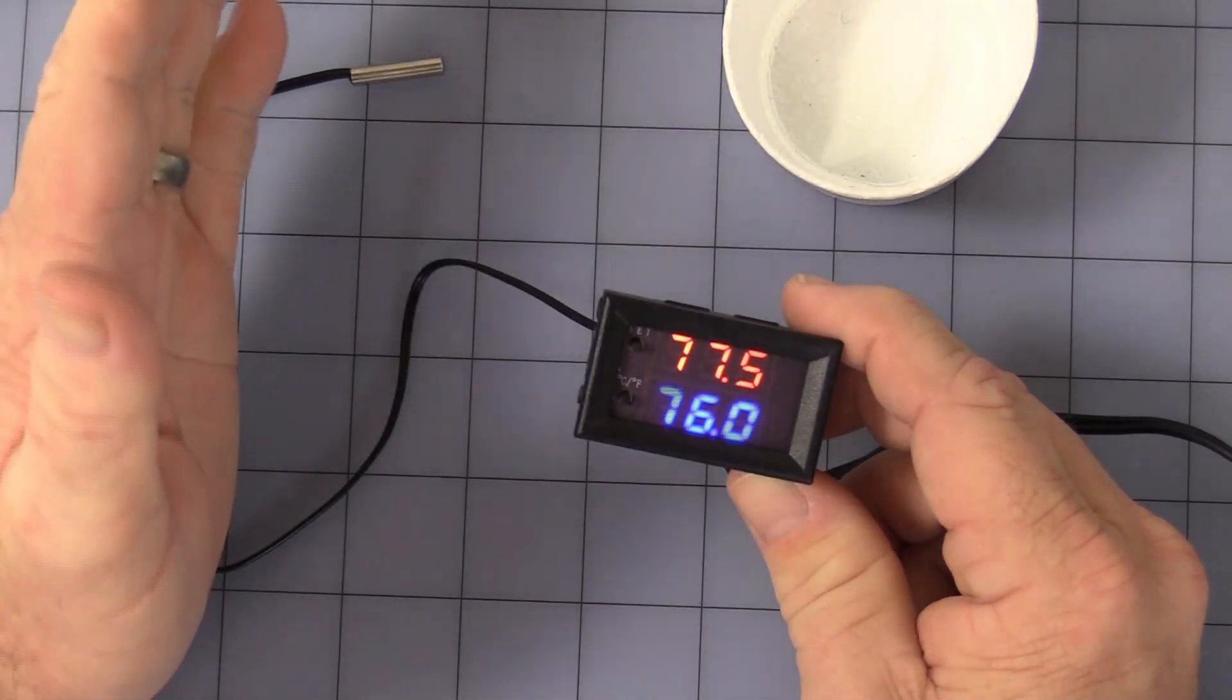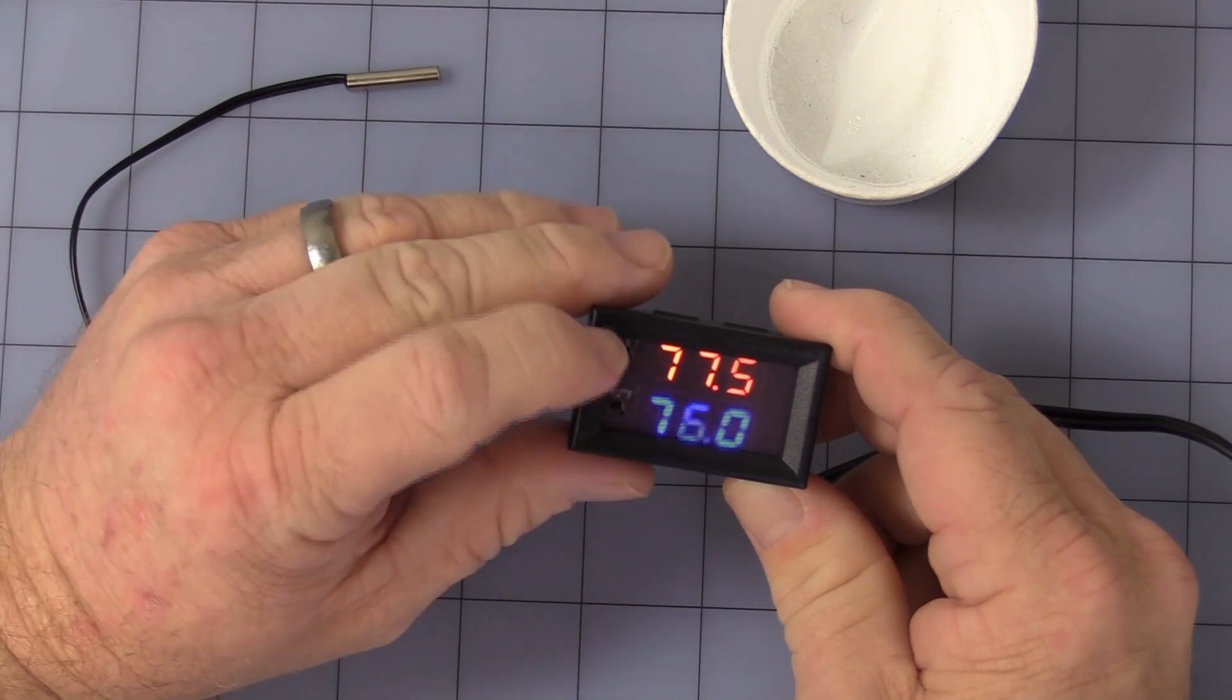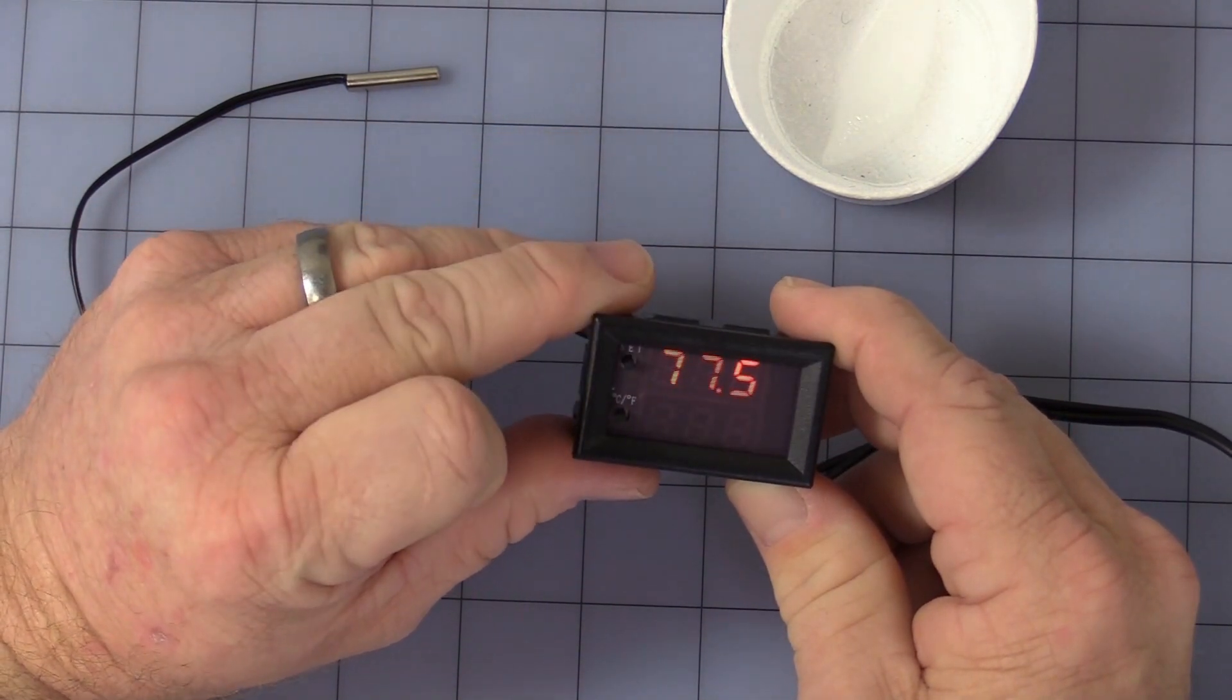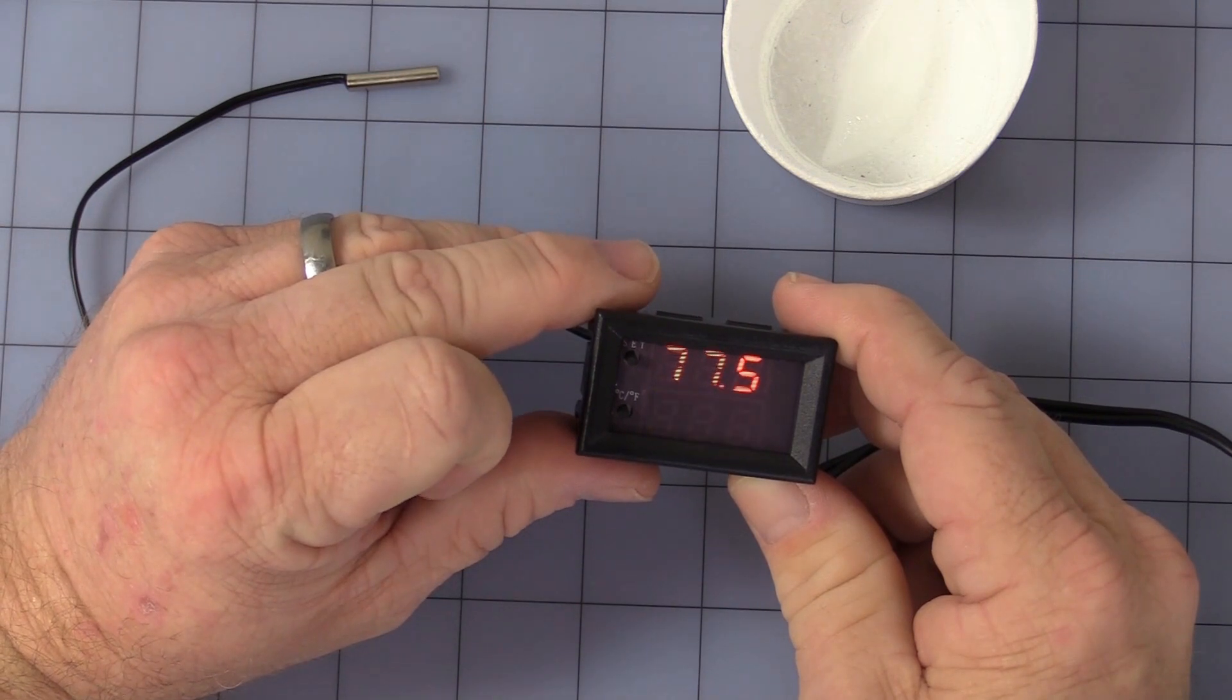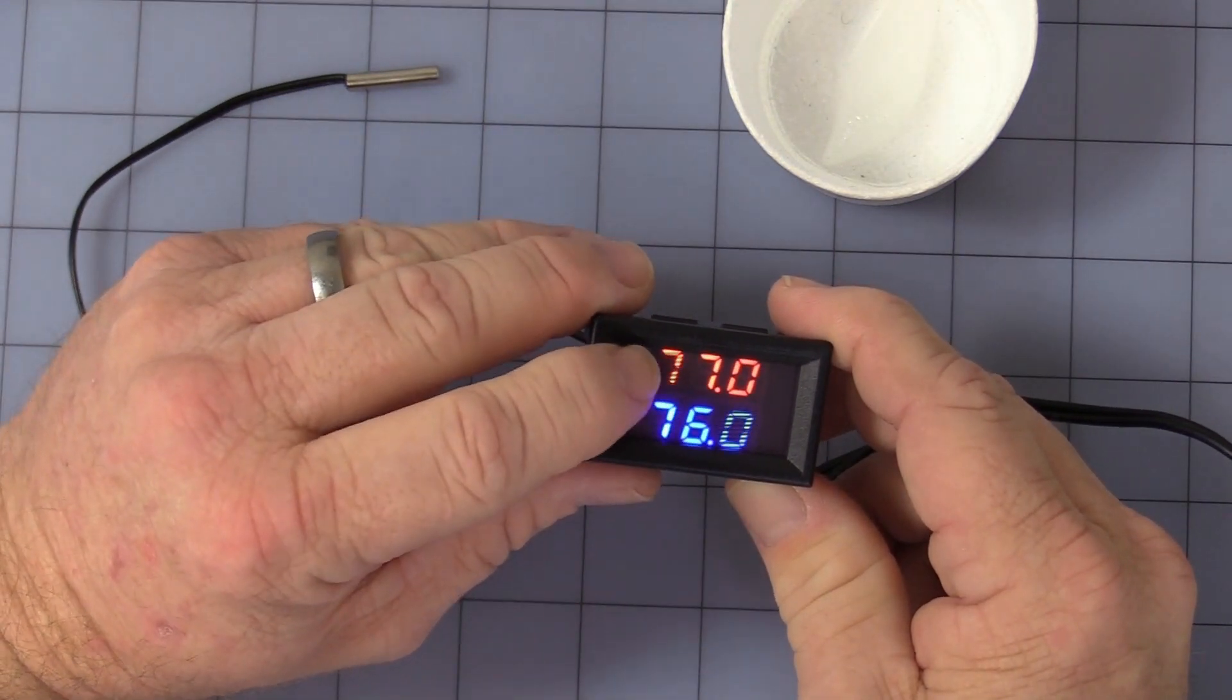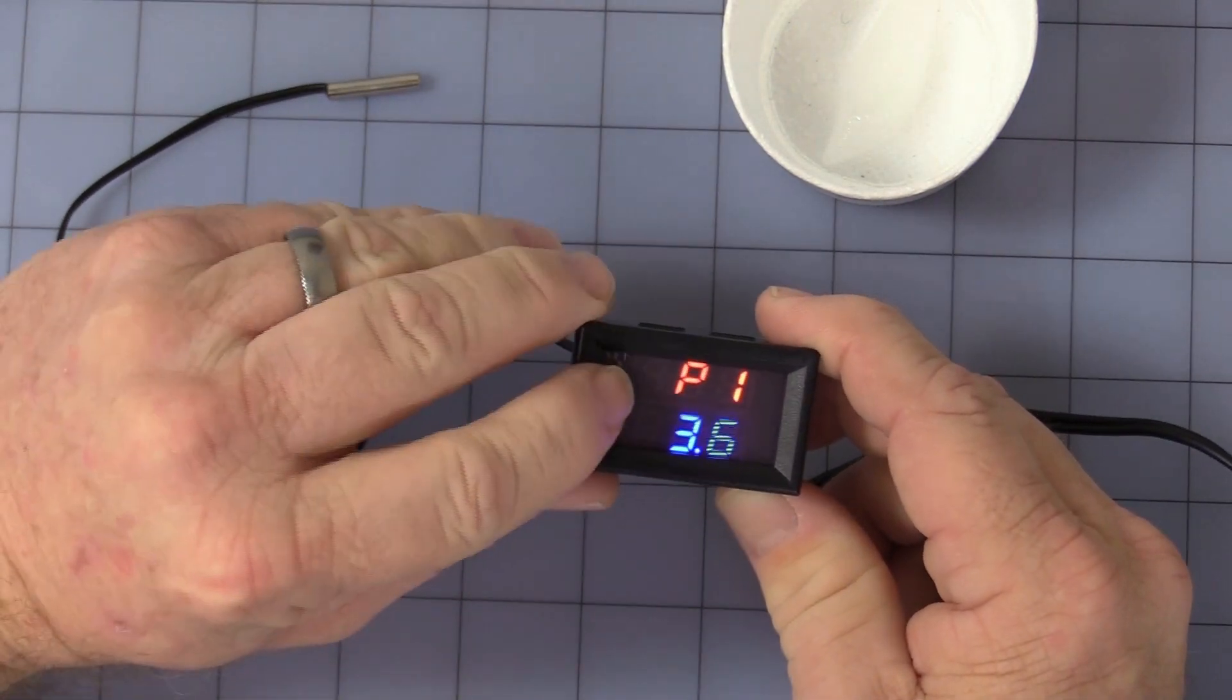Next program, P1. This is how you change the hysteresis. Press and hold the set button. Nope. Didn't hold it long enough. Just wait until it stops flashing. Press it again. Press and hold. Now, P0. Press up 1, and you get P1.